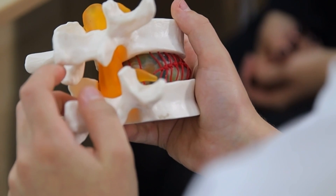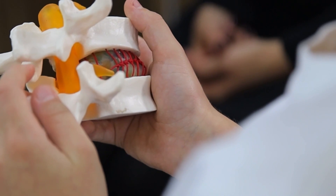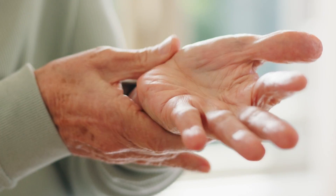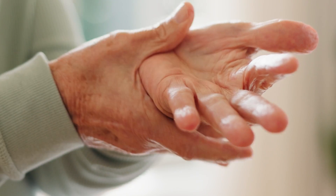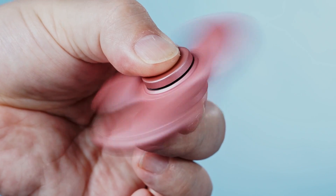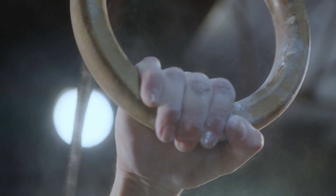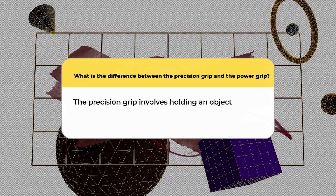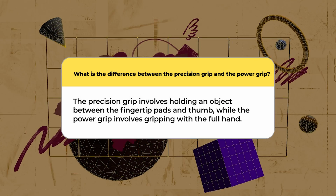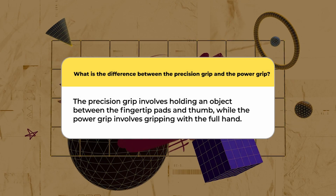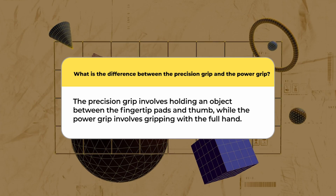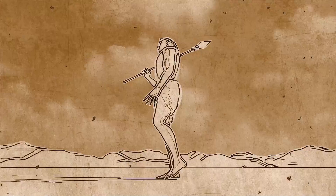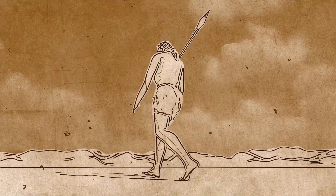Another theory suggests that our hands evolved to hold and throw objects accurately. The proportions and non-uniformity of our palms and fingers enable us to utilize precision and power grips, which other primates cannot do. The precision grip involves holding an object between the fingertip pads and thumb, while the power grip involves gripping with the full hand. This versatility was fundamental to our ancestral tool-crafting abilities.